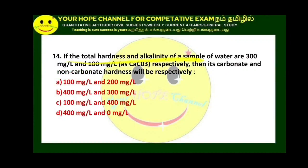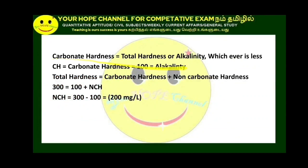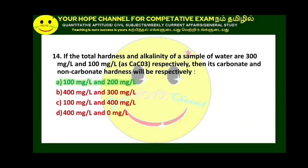If the total hardness of a sample is 300 mg/L and alkalinity is 100 mg/L, then carbonate hardness equals alkalinity = 100 mg/L, and non-carbonate hardness = 300 minus 100 = 200 mg/L. The answer is option A: carbonate hardness 100, non-carbonate hardness 200 mg/L.